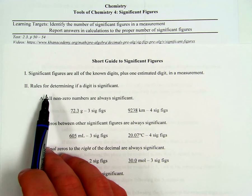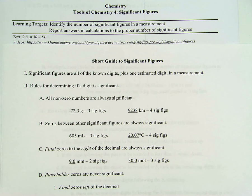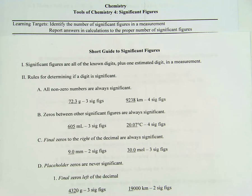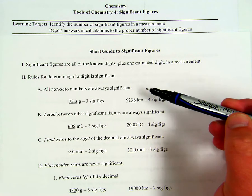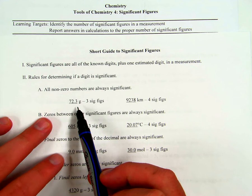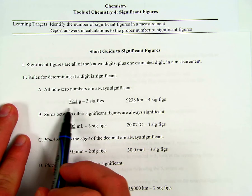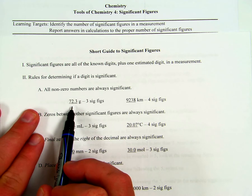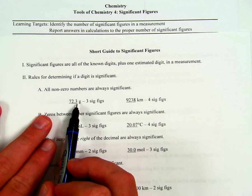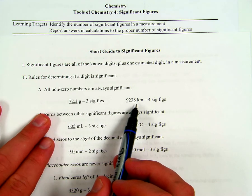We have rules for determining if a digit is significant when we're just looking at a number in a measurement. Rule one: all non-zero numbers are always significant — either known or estimated. So 72.3 grams has three sig figs, with the three being the estimated digit. And 9,238 kilometers has four sig figs, with the eight as the estimated digit.